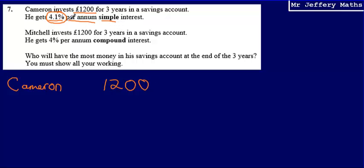So he's going to have 4.1%, that amount of the £1,200, and that amount will just be added on for every year that he keeps it in the savings account. So it's going to be £1,200 plus 4.1% of £1,200. So let's work that out, 4.1% of £1,200 using a multiplier method. So 4.1% would be 0.041 as a decimal, and that will be multiplied by £1,200, and he's going to receive that amount three times.